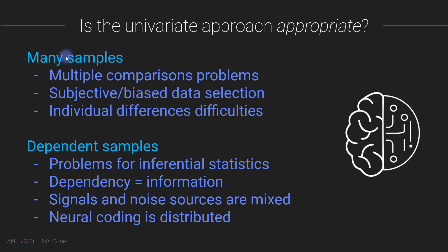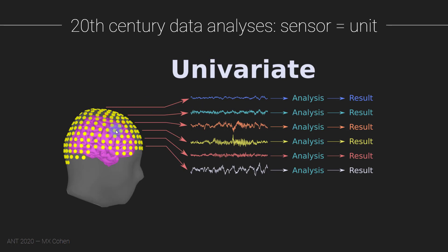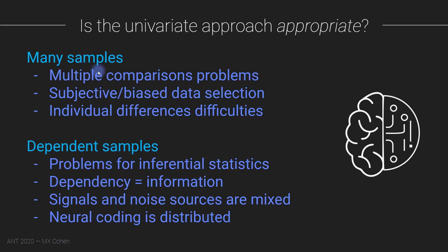There are a couple of problems. We run into multiple comparisons issues. For mass univariate analyses, we're going to have to select data somehow, which might be a little subjective or biased. There are also difficulties dealing with individual differences. Furthermore, all of these samples we're drawing are not independent — they are dependent over time and over space. The activity at one electrode is very strongly correlated with the activity at a nearby electrode. Is it appropriate to treat these two electrodes as completely separate statistical entities?